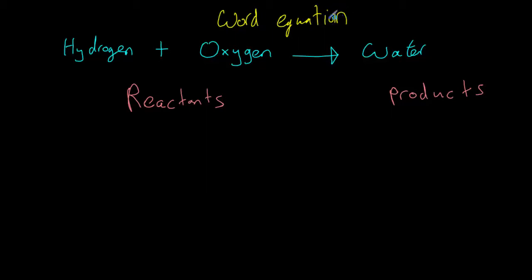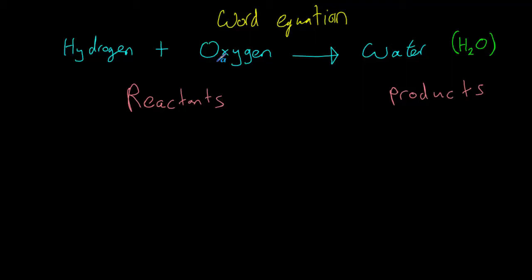In general, this kind of equation is called a word equation, and that of course makes sense because we have written all the substances as words. These equations aren't as useful as the next type of equation, but they're a good starting point. The reason why they're not as useful is that if you have a look at water in the equation, we can't actually see what water is made up of. We should know that water is H₂O — two hydrogens and an oxygen — but from looking at the equation we cannot actually see that.